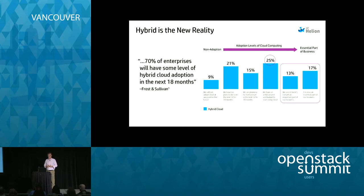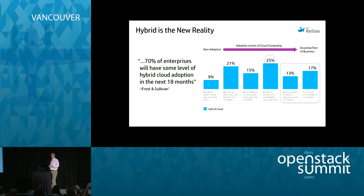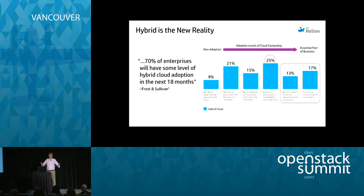Part of our fundamental core belief is that enterprises will not all move to a public cloud. How many of you work for companies that have been in business more than 50 years? How many of you still have workloads that run on a mainframe? How many still have workloads on Unix servers — not Linux, Unix? My point is that stuff didn't disappear and it's not going to disappear overnight. We're going to work in a hybrid environment.